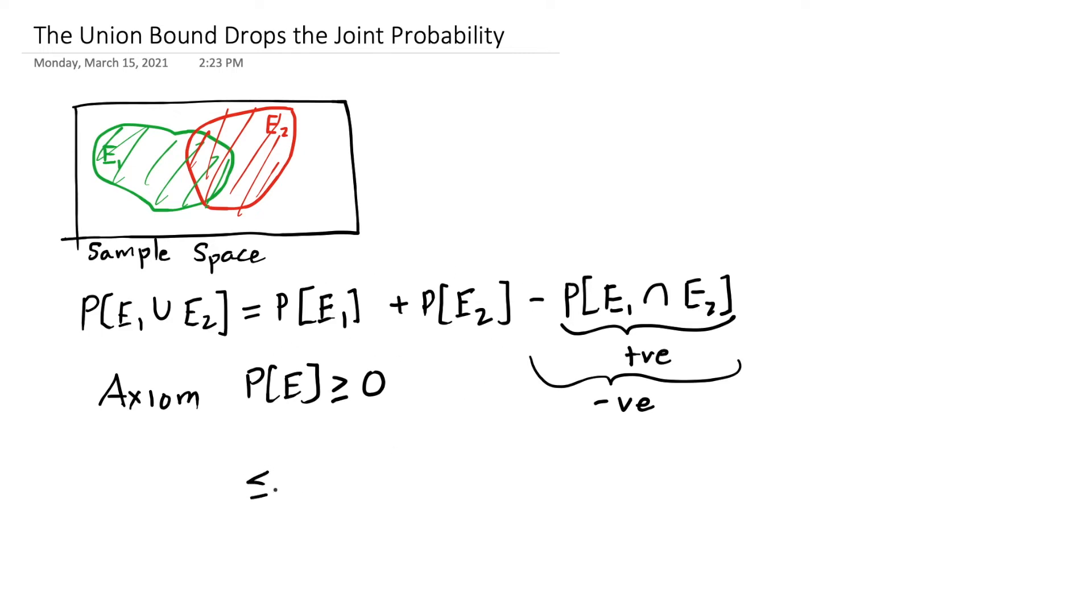So what the union bound says is that it's going to drop that joint probability, and it's going to become the probability of e1 plus the probability of e2, and we're going to leave the union event on the other side. That probability of that union event is less than or equal to the probability of e1 plus the probability of e2.